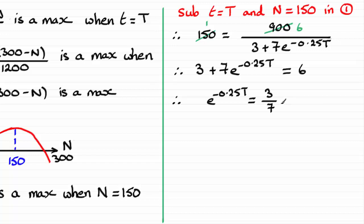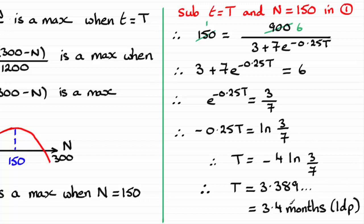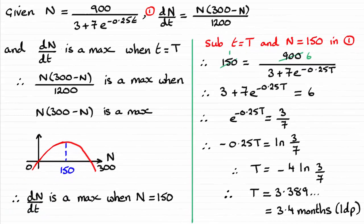At this point, all I need to do is take natural logs of both sides, which gives us minus a quarter T. Multiplying both sides by negative four leaves T as the subject. Doing that, I end up with the exact result. You could leave it like that, or put it through your calculator — you get T equaling 3.389, which rounded to one decimal place is 3.4. And remember, we're dealing with months here. I hope this has given you an insight into how to do that question if it caused any problems.